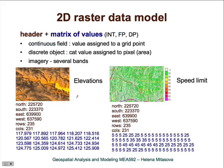Let's look at the actual representation. In GIS, raster data usually has a header that describes the raster and then a matrix of values. These values can be integer, floating point, and so on. For continuous fields, the value is usually assigned to a grid point. For discrete objects, raster values are considered as assigned to the pixel area.